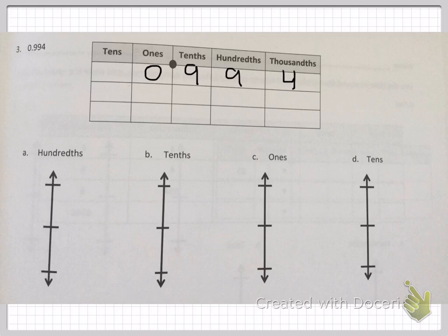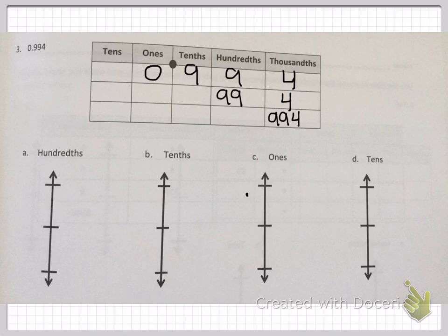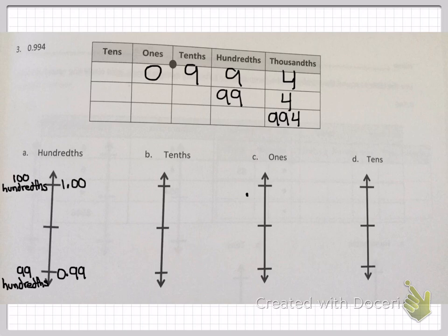Number three: nine hundred and ninety-four thousandths. I've already put it in the place value chart — ninety-nine hundredths and four thousandths, and nine hundred and ninety-four thousandths. We're going to be rounding to the hundredths, tenths, ones, and tens. Let's start with hundredths. According to our place value chart, we have ninety-nine hundredths at the bottom. At the top, I put a hundred hundredths, which is the same as one, or one point zero zero. I would include the decimals — it'll help you see.